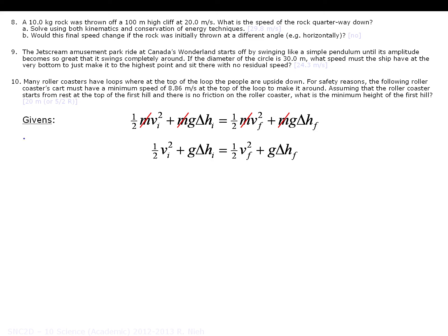So question number eight, you have a 10 kilogram mass, which I guess it doesn't matter but we'll still state it in our givens. Mass equals 10.0 kilograms. Was thrown off an initial height of 100 meters at a vi of 20 meters per second. What is the speed of the rock quarter of the way down? In other words, your delta Hf equals delta Hi minus a quarter of delta Hi. So whatever your initial height is subtract a quarter of it because you've fallen that far down. In other words, you're going to be three quarters of delta Hi down, which is 75 meters.